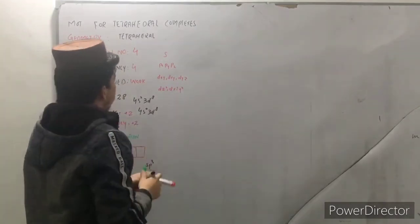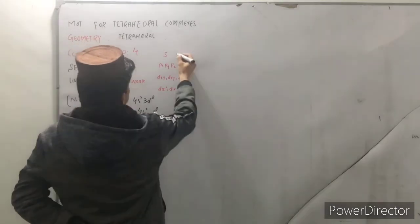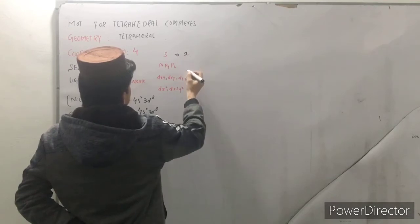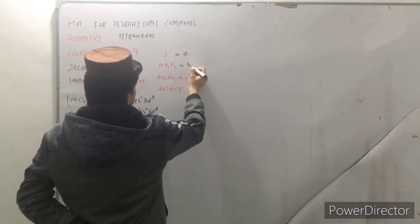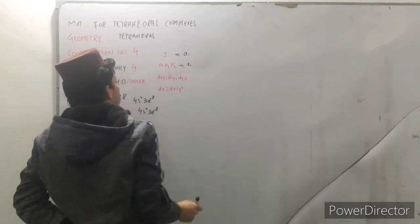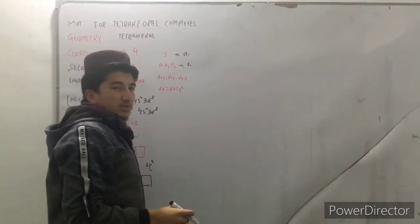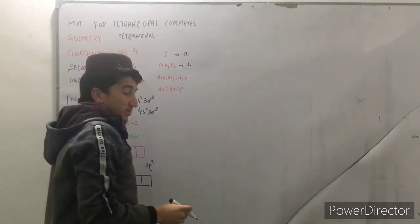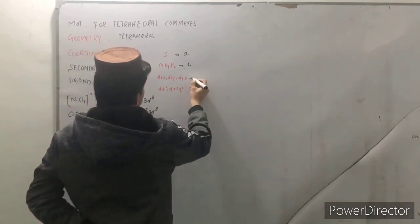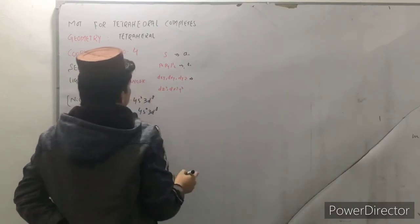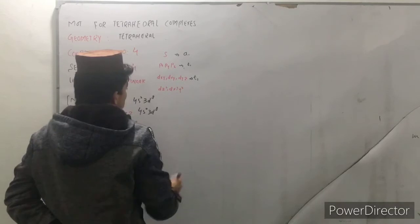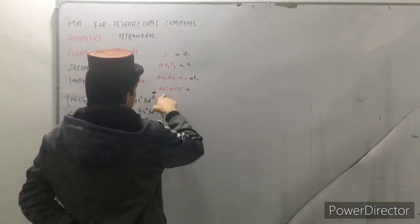For this s, the representation designation is a1. For px, py, the group theory designation is t1. You will study about reducible and non-reducible but if you are interested in group theory, let me know in the comment section. For dxy, dyz, dxz the representation is also t1 and for dz square and dx square y square is e.